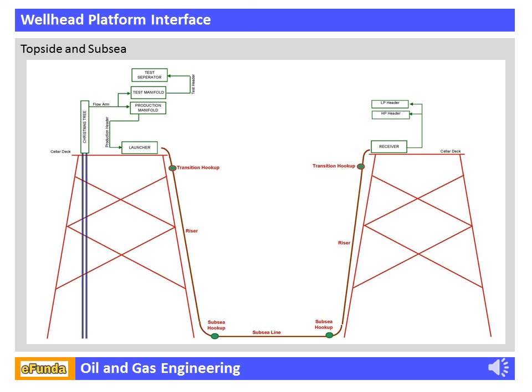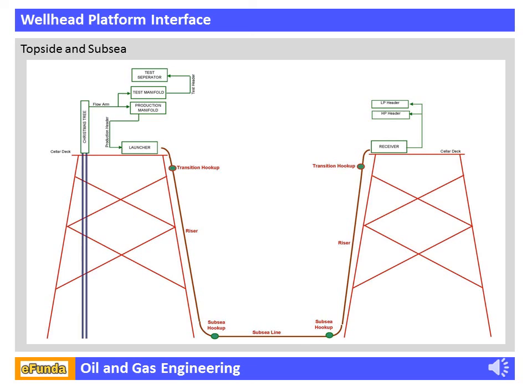The wellhead platform interface consists of topside and subsea sections. The topside facility comprises operational units for receiving crude oil by means of water and gas injection, and separation of oil, gas, and water respectively. The topside facility performs well flaring and gas processing with the help of equipment, piping, and associated instruments. Subsea refers to fully submerged ocean equipment, operations, or applications, especially when some distance offshore, in deep ocean water, or on the seabed.